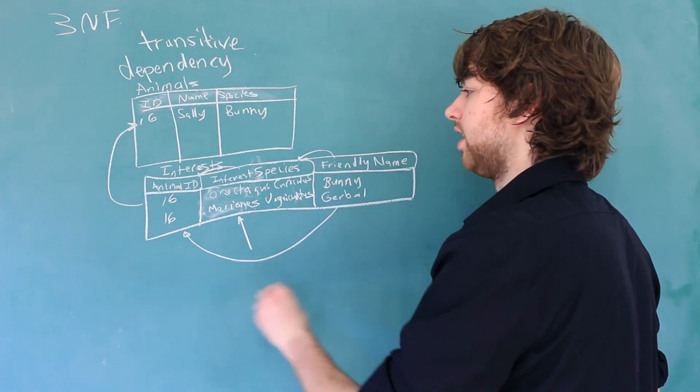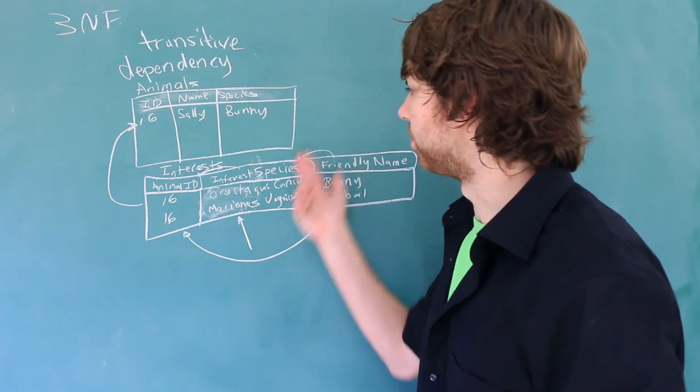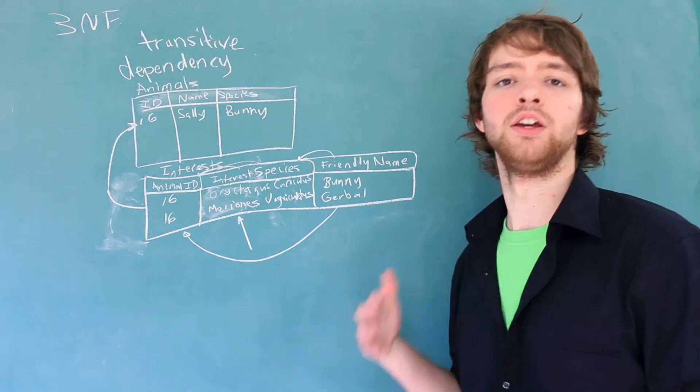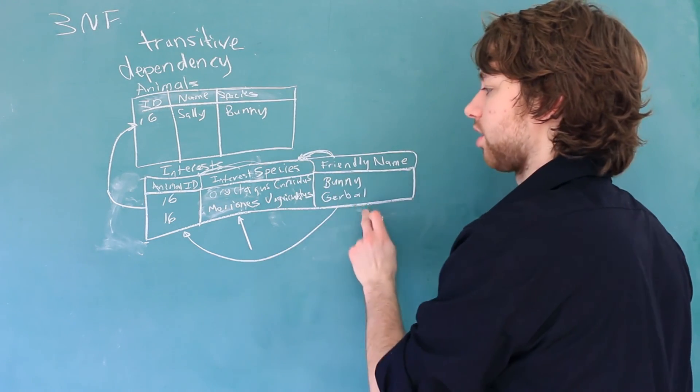So this friendly name is dependent on the animal ID, but it's dependent through another column. So you can see the way we have our database set up is just messy. How do we go about fixing this?